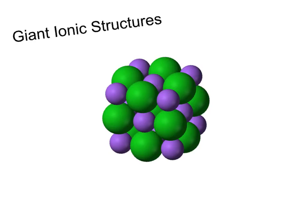Hello everyone. In this video I'm going to be talking through what giant ionic structures are. When I say ionic, I'm essentially referring to a structure containing ions of both metals and non-metals. I have done a video about ionic bonding, specifically the electrostatic attraction that forms between metal cations and non-metal anions. Now I'm going to talk about the structures that these ionic compounds form, and I'm going to use sodium chloride as an example.